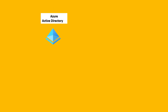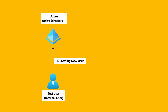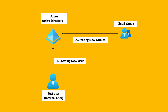Let me use some diagrams to explain how to create a user and the purpose of creating groups. When creating a new user in Azure Active Directory — for example, a user called 'test user' — that user is called an internal user because they are added directly inside the Active Directory. Instead of assigning permissions to individual users, the best practice in organizations is to create a group and assign permissions to the group.